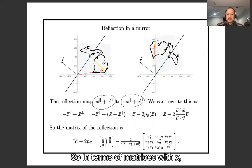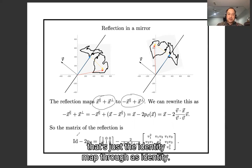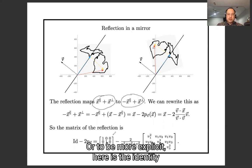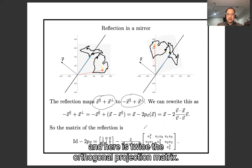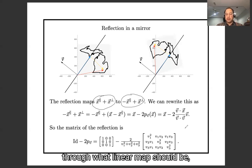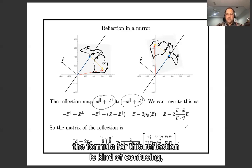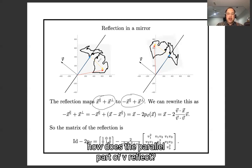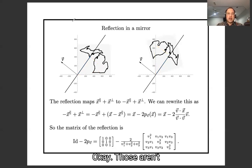So in terms of matrices, the reflected vector is X minus twice X-parallel, or equivalently the identity map minus twice the orthogonal projection matrix. More explicitly, it's the identity minus twice the orthogonal projection matrix. This is our first example of using orthogonal projection to figure out what a linear map should be. The formula for reflection is manageable if we think separately about how the parallel part to V reflects and how the perpendicular part reflects.